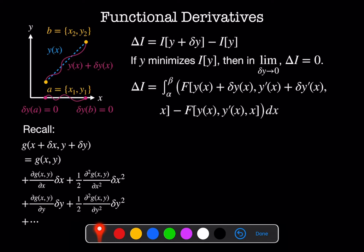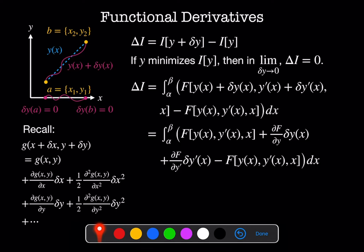Getting back to our delta I, we have f of y, y prime, and x, and we'll keep the terms in the expansion up to linear order. We've got df by dy delta y plus df by dy prime delta y prime minus f of y, y prime, and x. You'll notice that these two terms cancel and we're left with this term here. So the integral from alpha to beta df by dy times delta y of x plus df by dy prime delta y prime of x dx, and this is equal to zero since delta I is equal to zero.